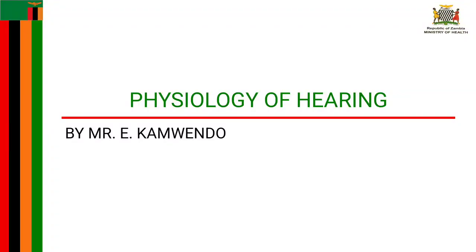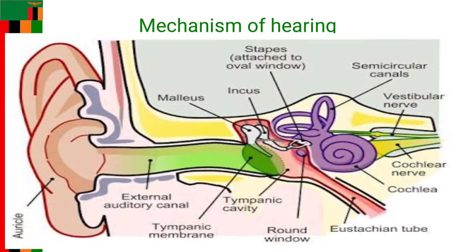Today let's look at the physiology of hearing. With the physiology of hearing, one thing you need to understand is that hearing depends on a series of complex steps that changes sound waves in the air into electrical signals. Our auditory nerve will then carry these particular electrical signals to the brain, and then the brain interprets what particular sound we have heard.